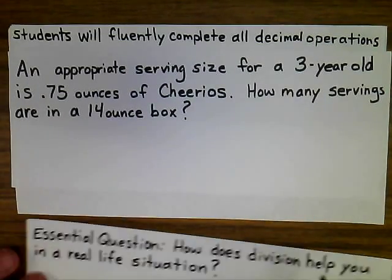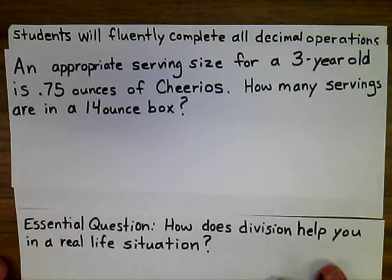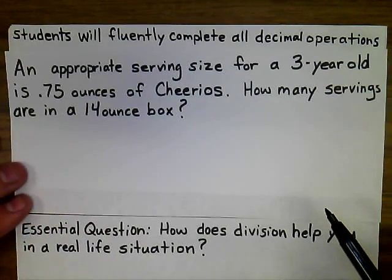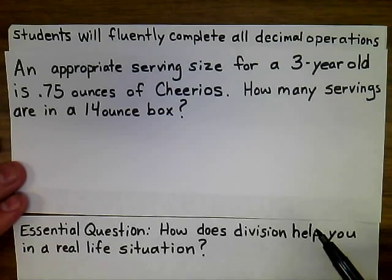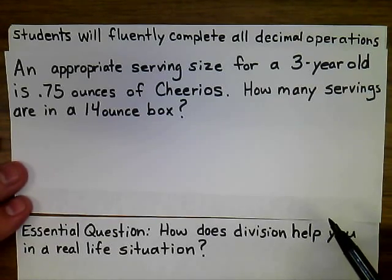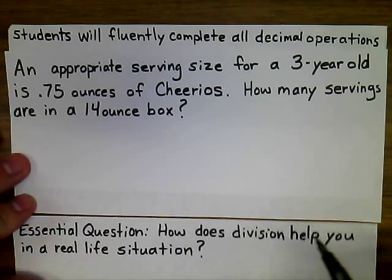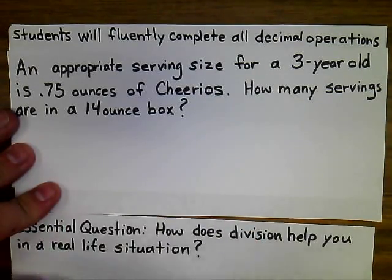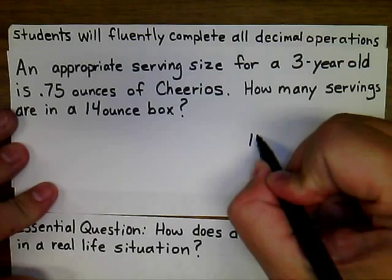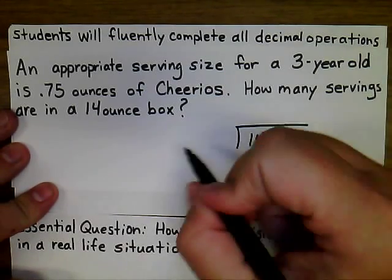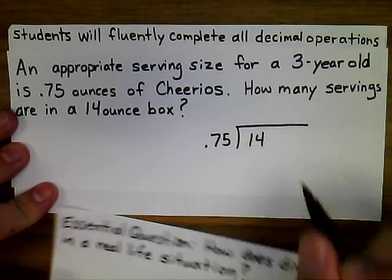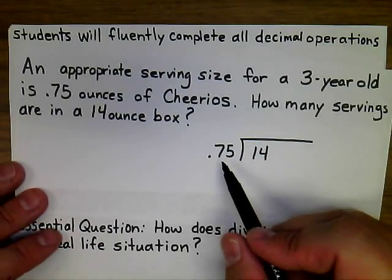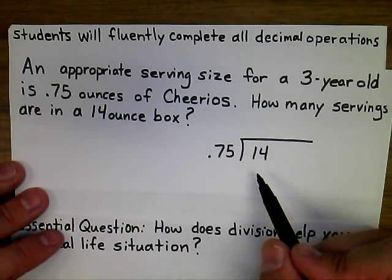Our final question answers our essential question on how division helps us in a real-life situation. An appropriate serving size for a three-year-old is 0.75 ounces of Cheerios. How many servings are in a 14-ounce box? To solve this, we take the large amount — 14 ounces, the full box — and divide it by 0.75.